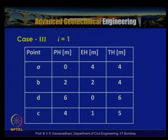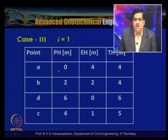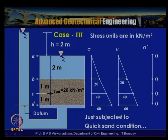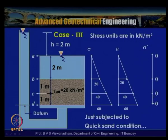In case 3 (i = 1, h = 2 m): at A total head = 4 m, at B total head = 4 m, at D with elevation head = 0 total head = 6 m, at C pressure head = 4 m, elevation head = 1 m, total head = 5 m. The pore water pressure equals 20, 40, 60 kPa, and σ' = σ − u = 0 at all points, indicating that this head of 2 meters just subjects the soil to a quicksand condition when frictional forces are neglected.